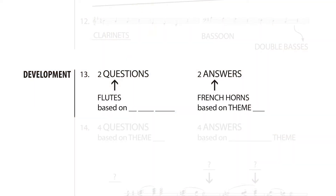Look at number 13 in the Listening Guide. We have a question-answer event happening. There are two pairs of questions played by the flutes and answered by the French horns. Your mission: which musical themes are used here? Here's the music.